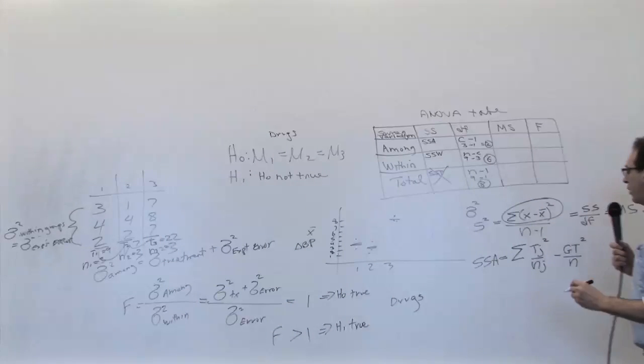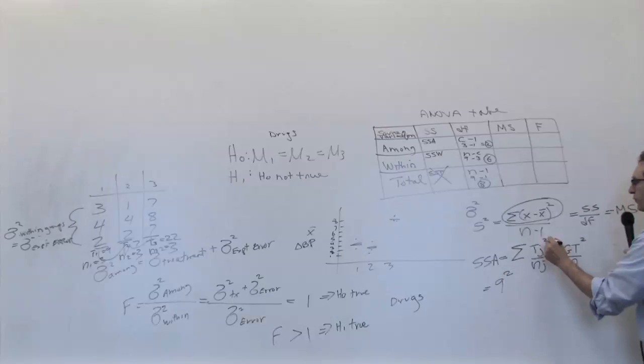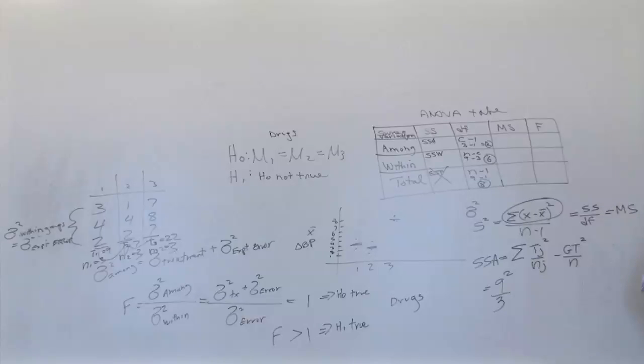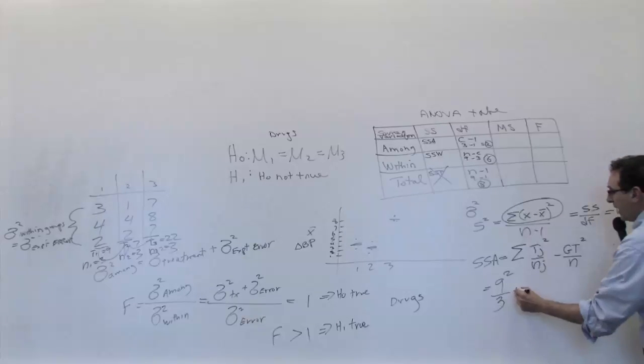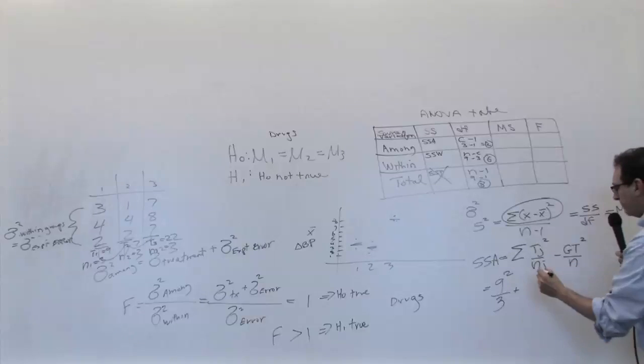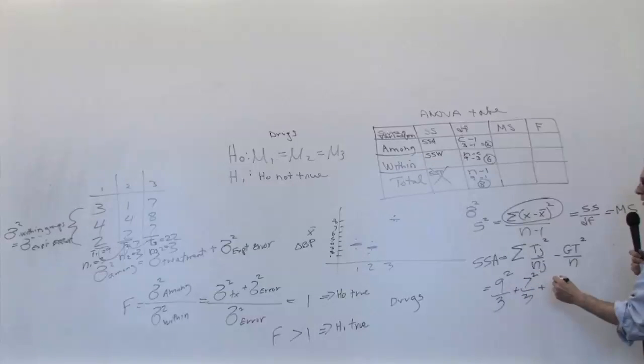Therefore, the total of the first column, which we just said was 9, when you square it, because the formula says take the total, square it, divide it by the number of numbers making up that total, which was 3. Add to that the numbers in the second column, which is equal to 7, but squaring it, divided by 3. The third column was 22. You can see the third column is really contributing a lot, because it's a big total, and you're squaring that number. Also divided by 3, coincidentally.